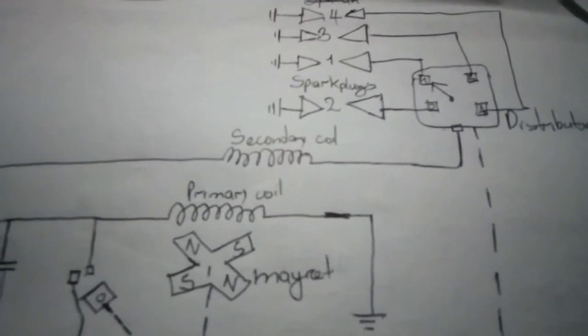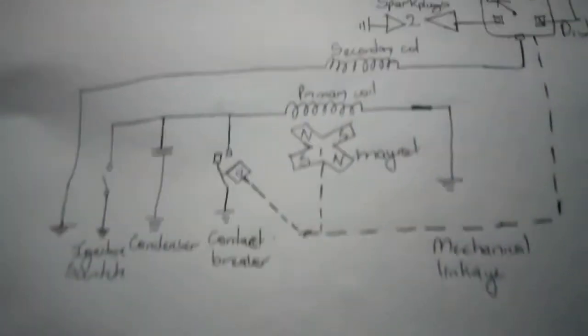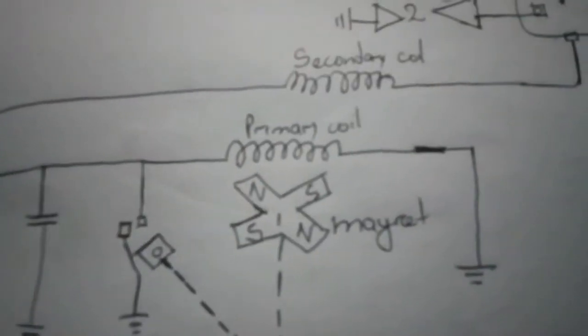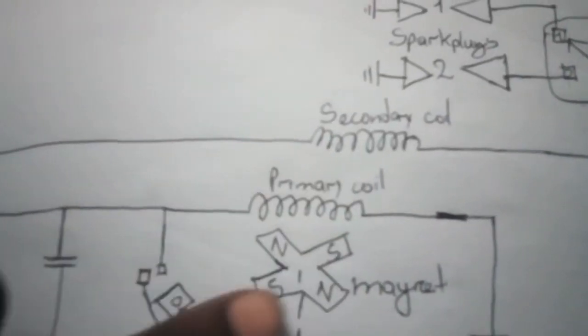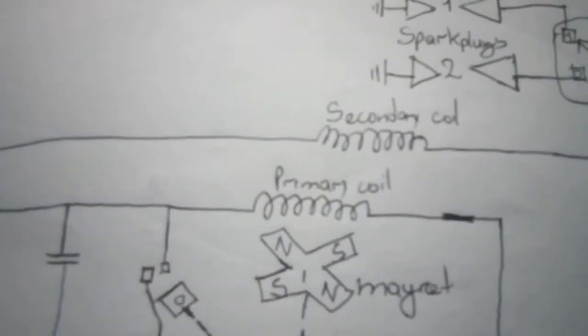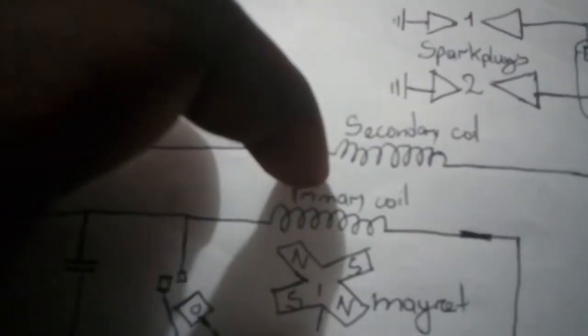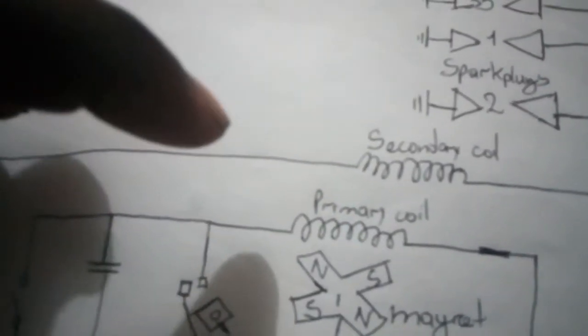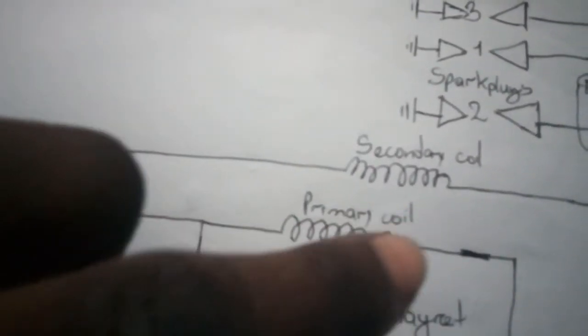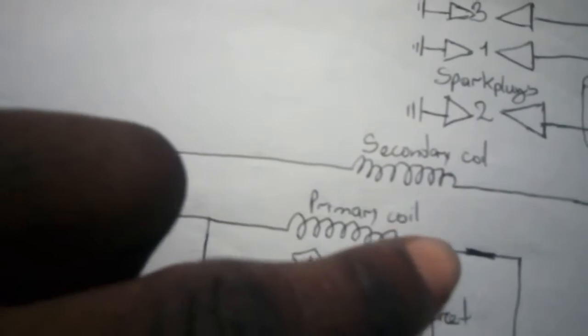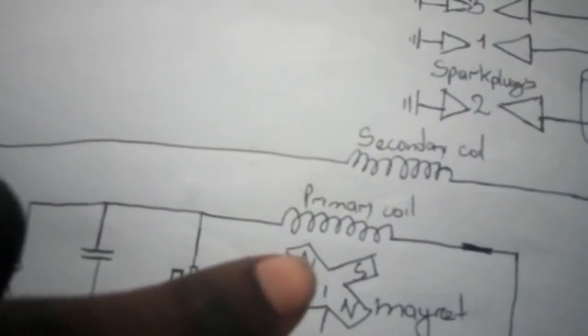Now this piece right here, the primary coil and magnet, this is the generator part for this magneto. As this magnet spins, it induces a voltage into the coil by the magnetic lines of flux cutting this primary coil.